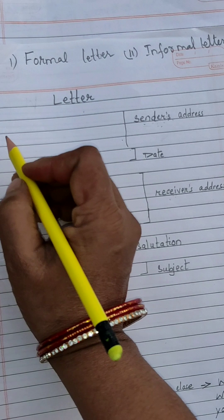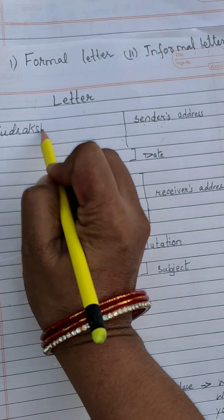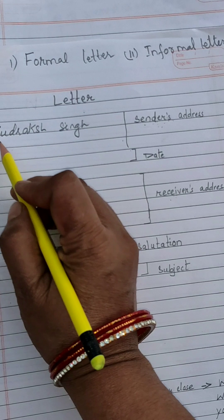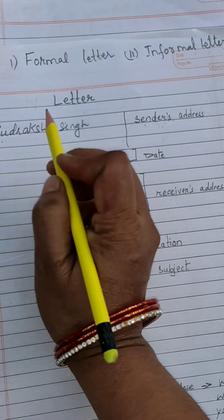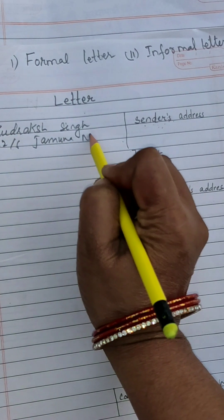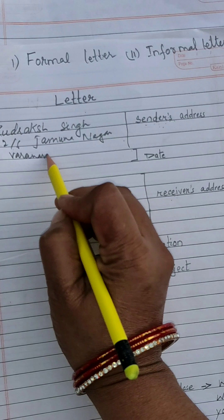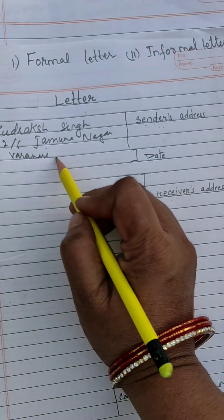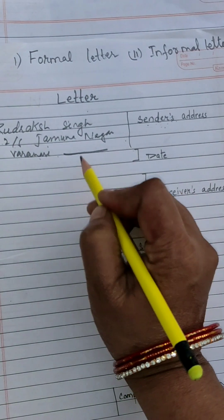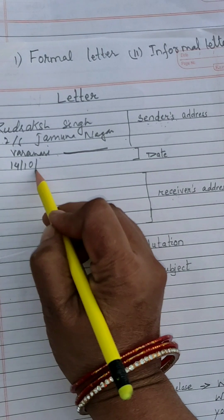First, let me write here. Suppose your name is Rudraksh Singh, and the address will be whatever your address — for example, 2/6 Yamuna Nagar, Varanasi. Whatever your district, you have to write the address, and after that the PIN number. After that here will be the date — suppose today's date is 14th October 2022.